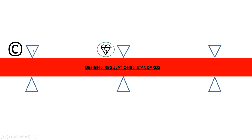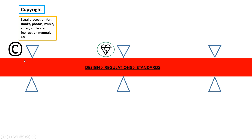The first one is copyright. Make sure you can remember the copyright symbol as it may be asked in an exam question. Copyright provides legal protection mainly for things like books, photos, music, video, software, and instruction manuals. So if somebody took your work — for example, a jingle or part of a track on an album — you could sue them if you had copyright on it.